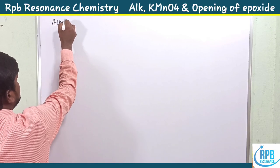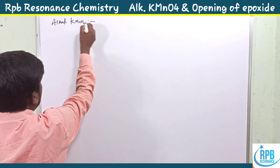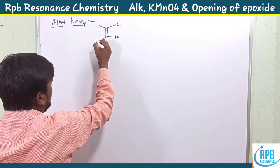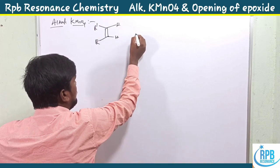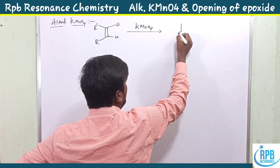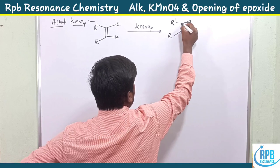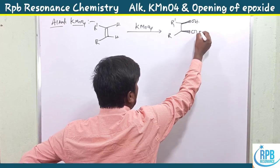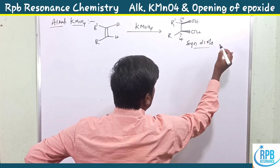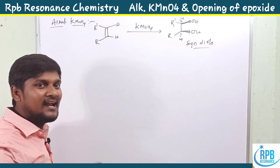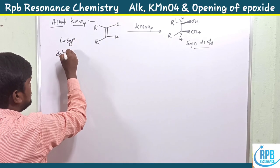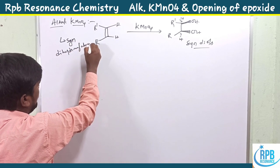Alkaline KMnO4 is nothing but Baeyer's reagent. This is a syn-dihydroxylating agent — it gives syn-diols. So KMnO4 is a dihydroxylating agent that converts olefins to syn-diols.